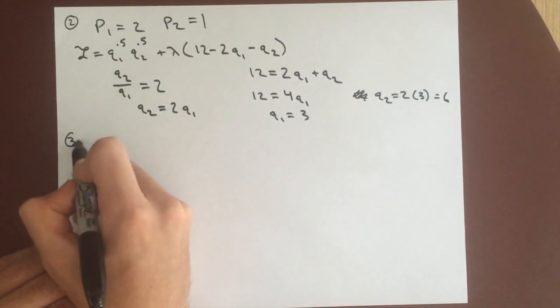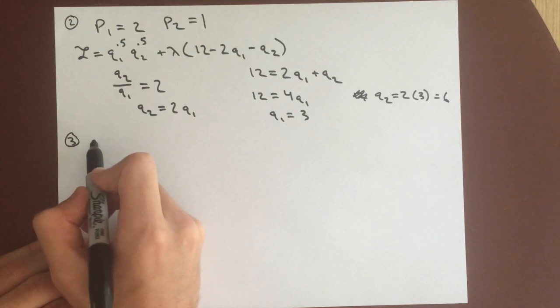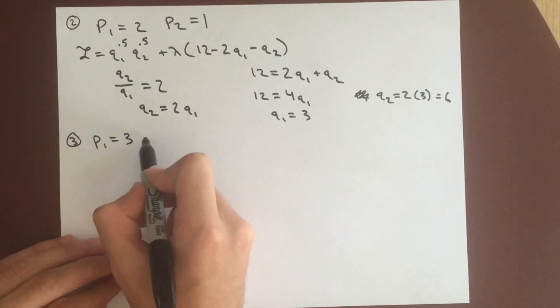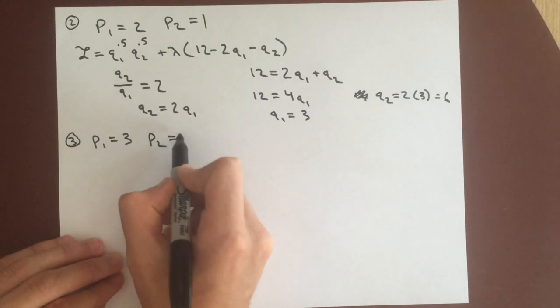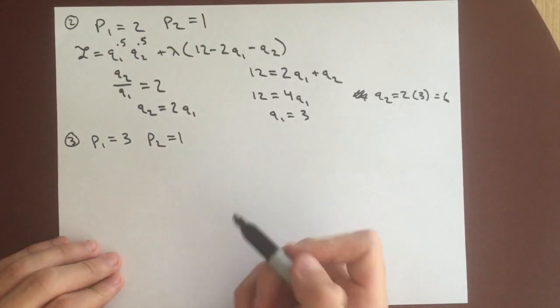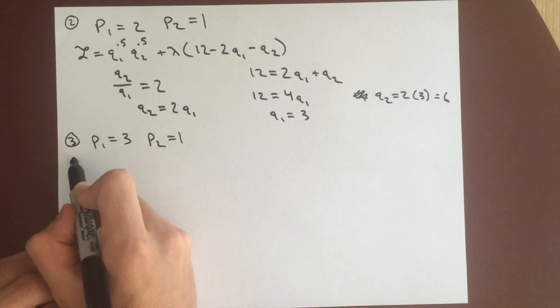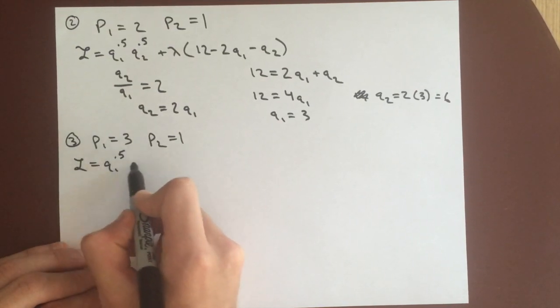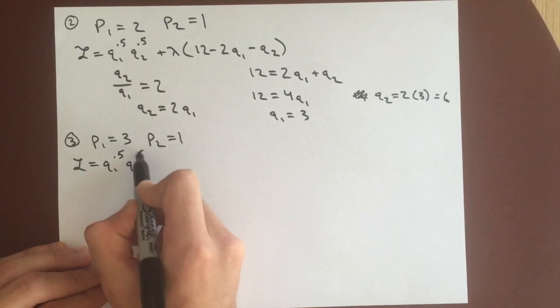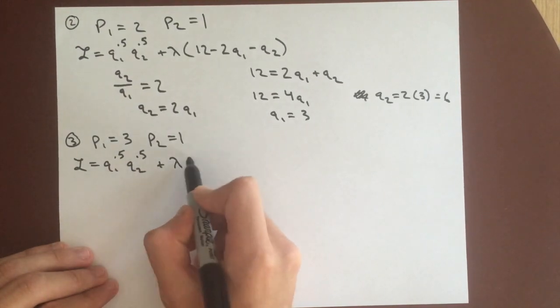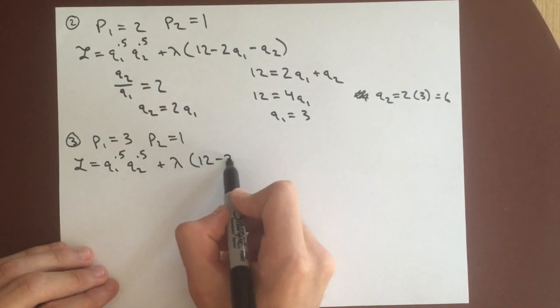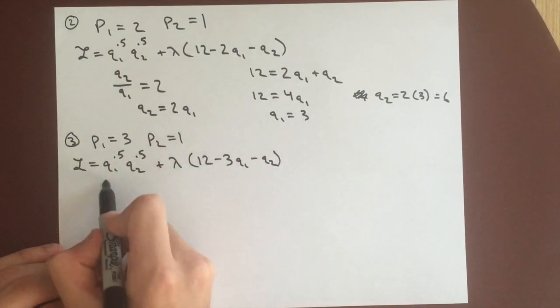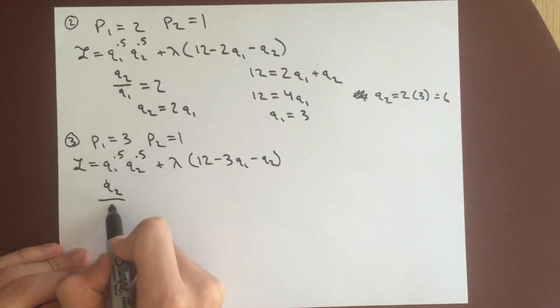Now, finally, we're just going to change the price again. This time, price 1 will go to 3. Price 2 can stay at 1, because we're only trying to find the demand curve for good 1. And again, this changes the Lagrangian to q1 to the 0.5, q2 to the 0.5, plus lambda, 12 minus 3, because that's the price of good 1, q1 minus q2.